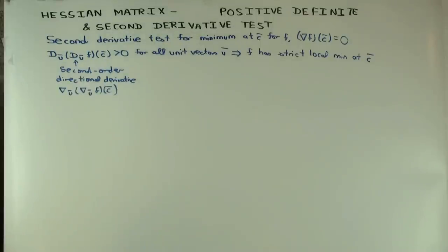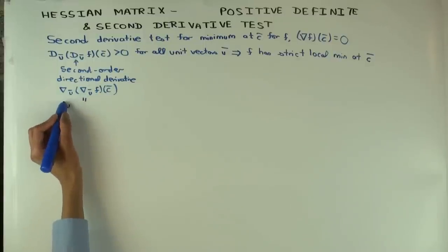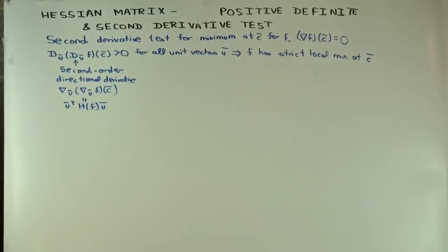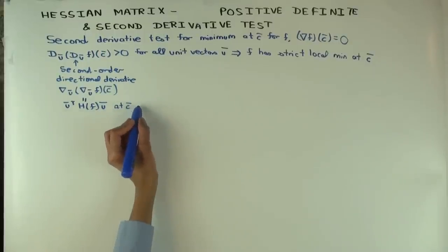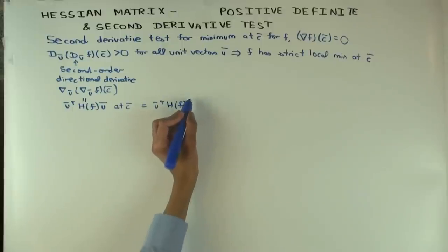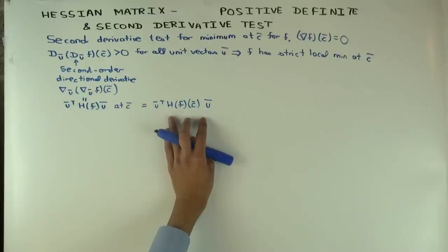What's another way of writing the second-order directional derivative in terms of the Hessian matrix, if it exists? It is u-transpose times H_f times u. Another way of writing this is u-transpose times H_f(c) times u, since u and u-transpose are not dependent on c.